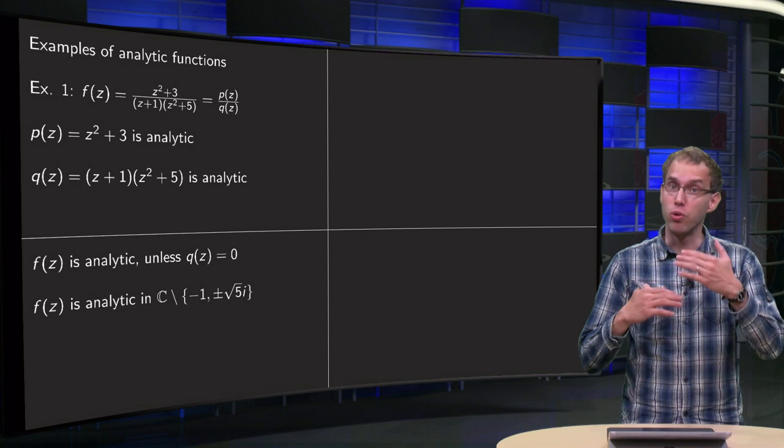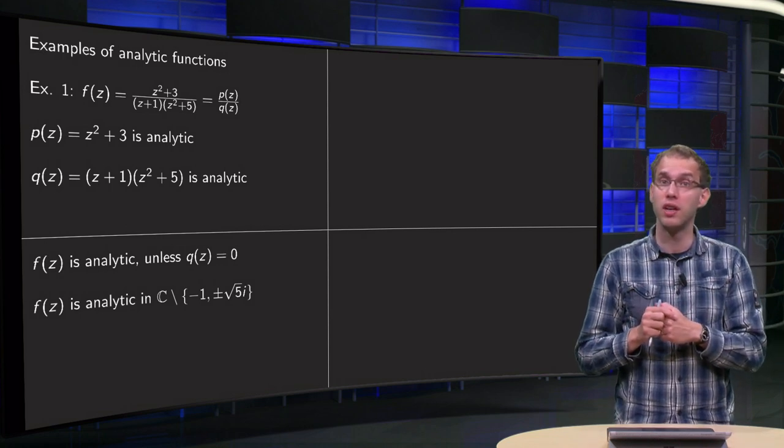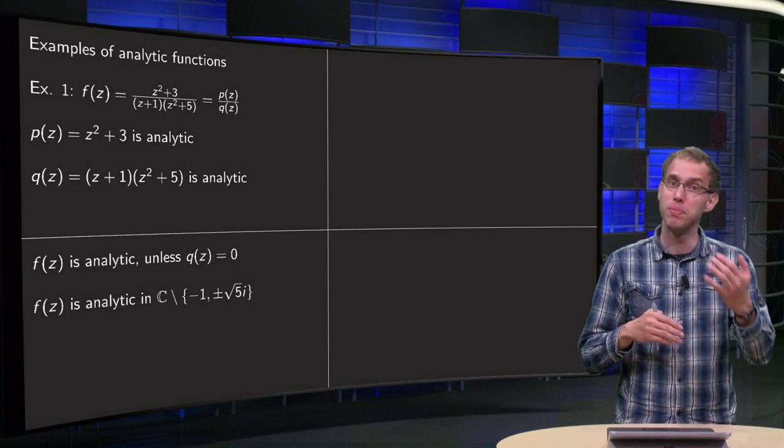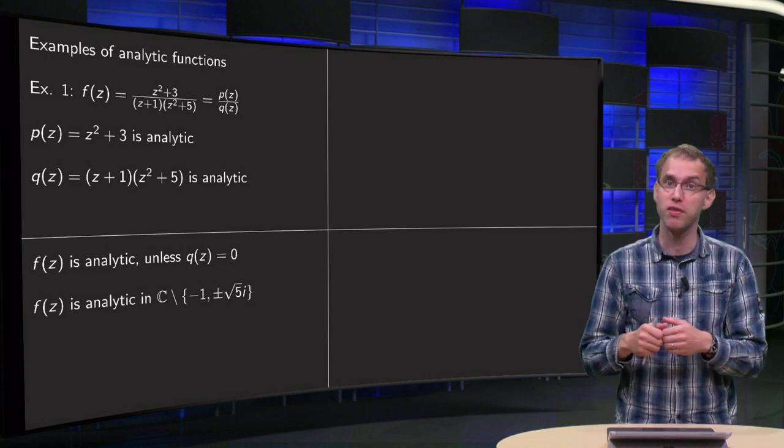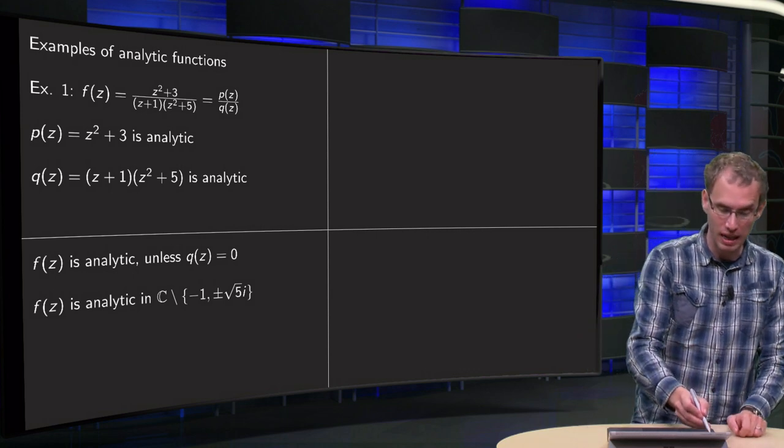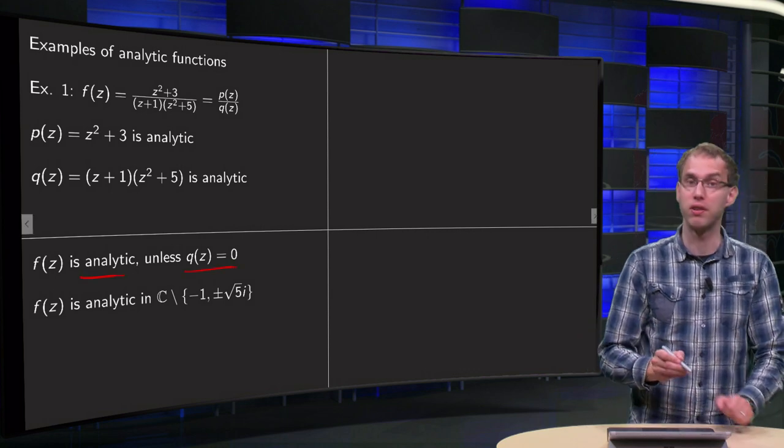Now we know quotient of analytic functions is analytic. p and q are analytic, so our function f is analytic, unless you are dividing by 0. So f is analytic unless q equals 0.